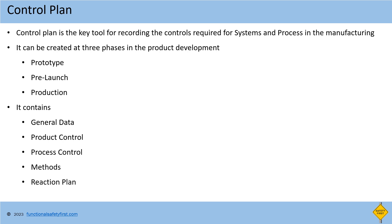Control plan document contains the following: generic data, which is basic information like part numbers, production site details, date, participants, customer information, etc. Then product control, which contains product-related special characteristics, specifications, and tolerance levels of the product. Next, process control, which contains process parameters, tolerances, process-related characteristics, and details of machines, equipment, and tools for manufacturing.